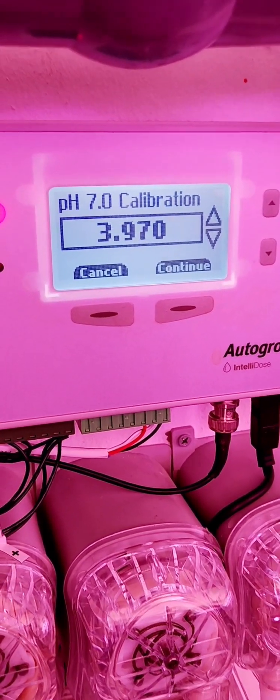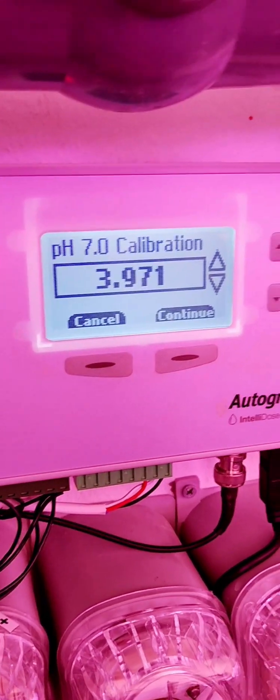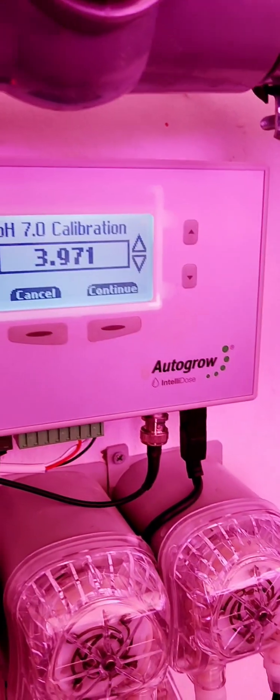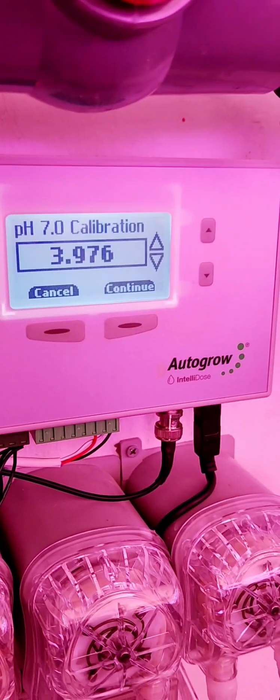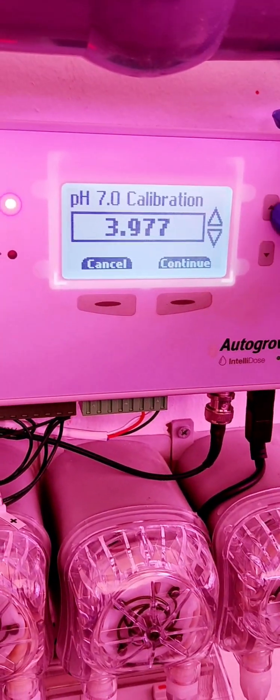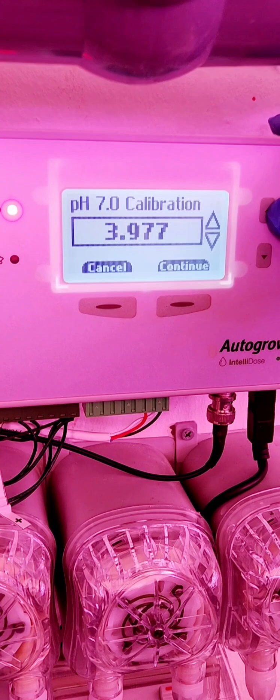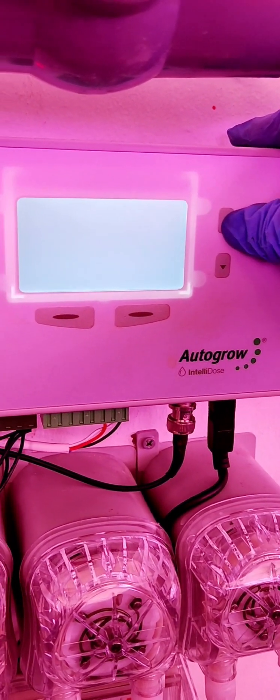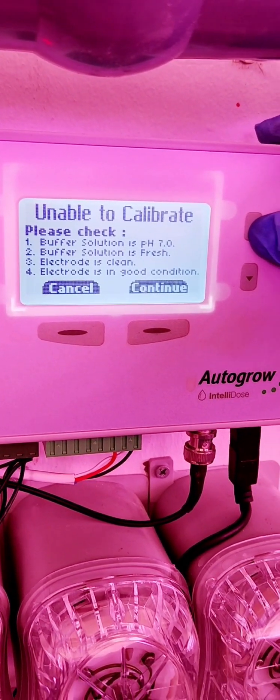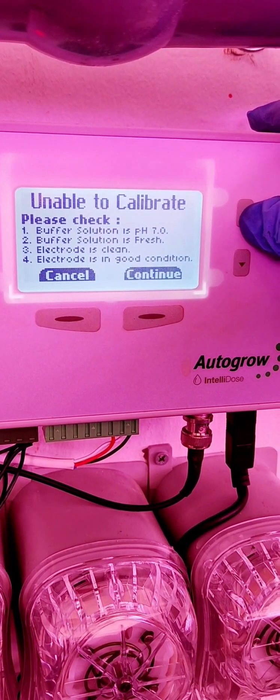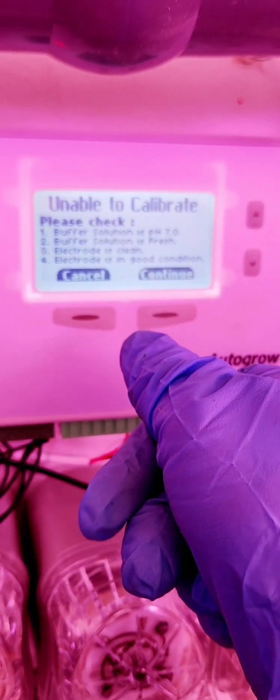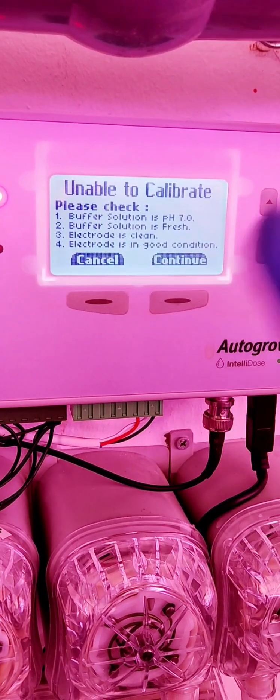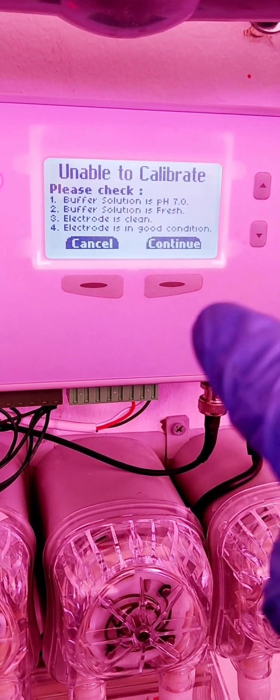But, in this case. In this one machine. I noticed the pH probe is not really functioning. If I will try to adjust it. I want to increase the number to achieve the 7.0. There. Unable to calibrate. Meaning to say. It's giving. The system is giving some tips. How to check or to consider why we cannot able to calibrate.